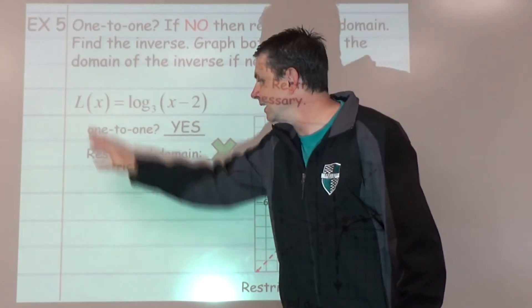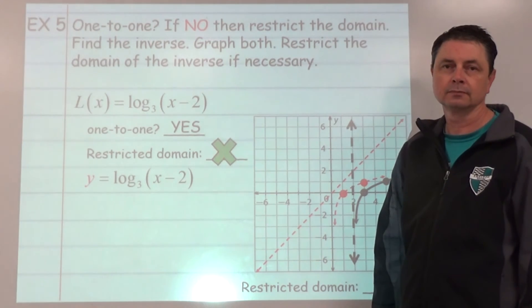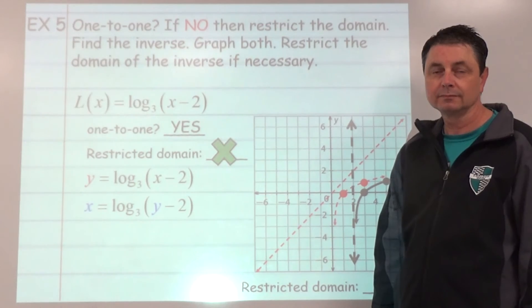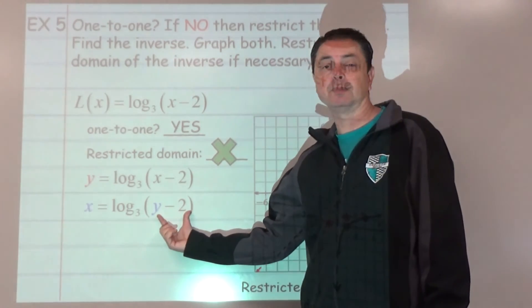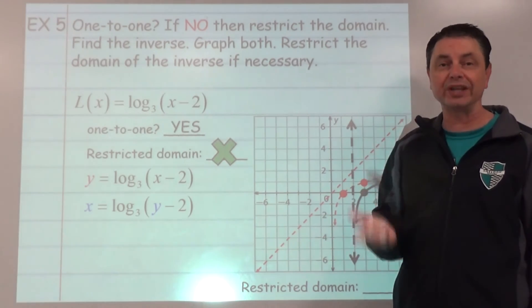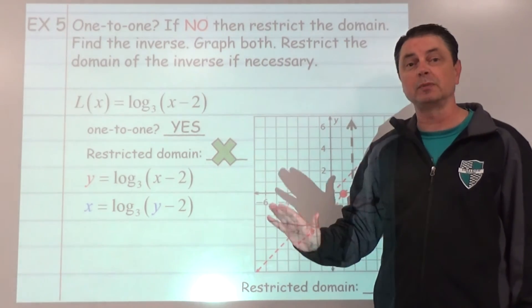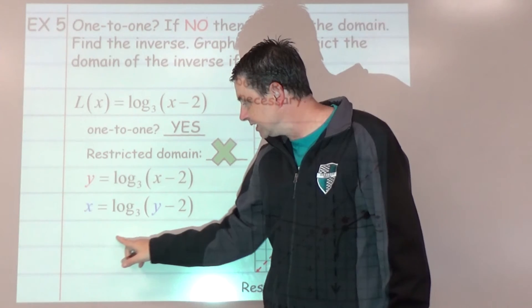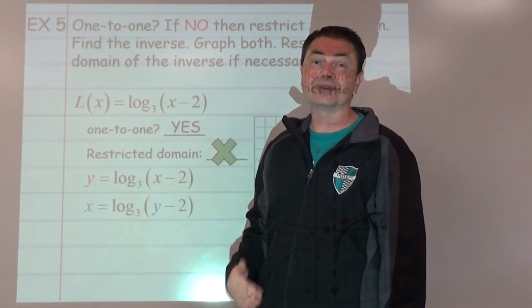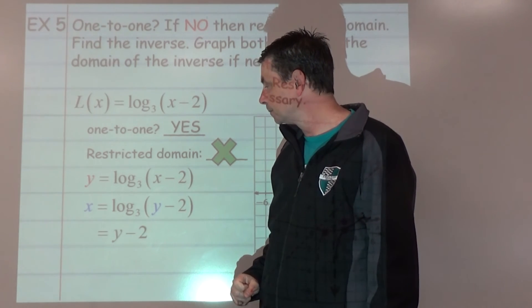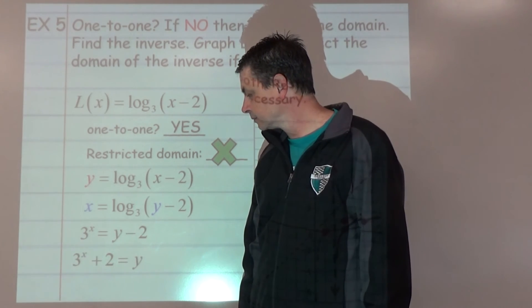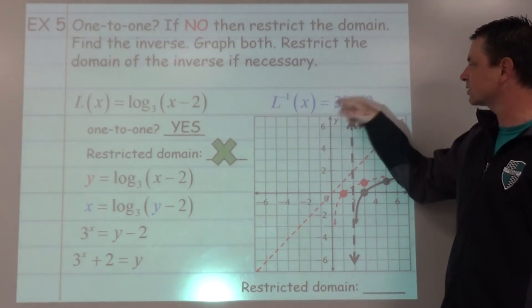We can go after the inverse. Our four-step process, y equals. Now we're going to switch the x and the y. And we're going to solve for y. We can't undo the minus 2 because it's buried inside the log function. So let's undo the log function by rewriting into exponential form. We move the base. So 3 is going to move to the other side as the base, and x bumps up to be the exponent. So log goes away, it'll be y minus 2 equals 3 to the power of x. Now we can add 2. So our inverse, L inverse of x, is 3 to the power of x plus 2.